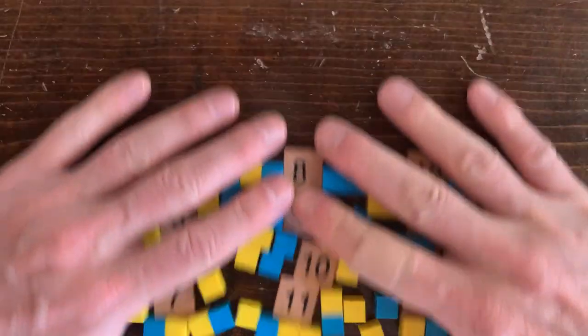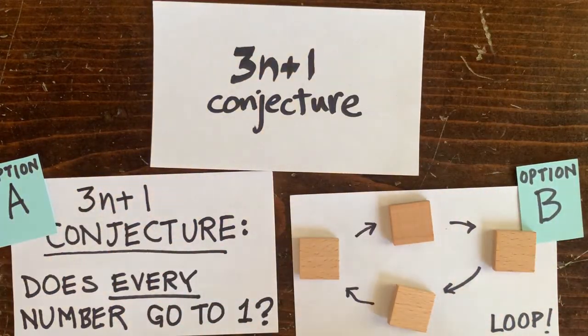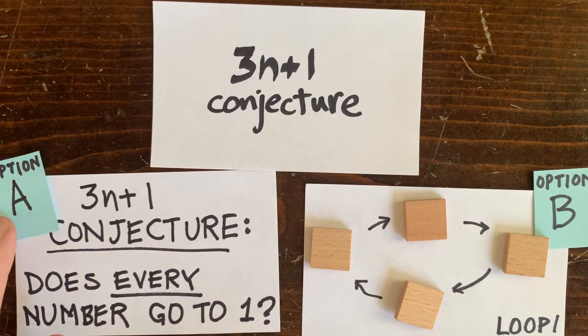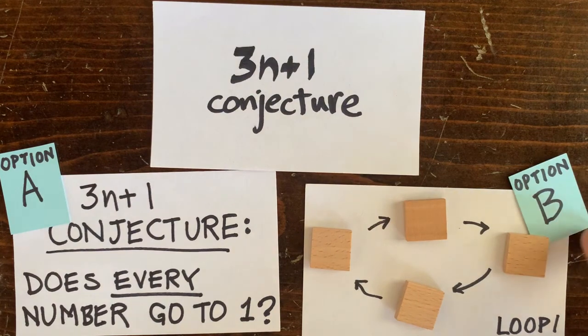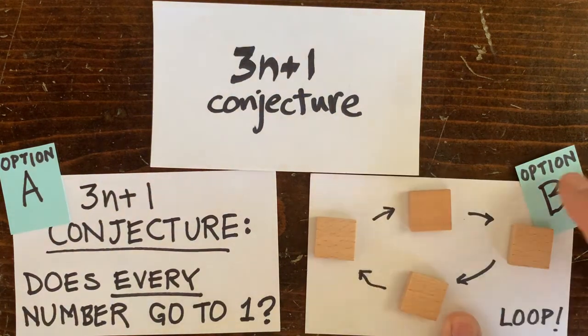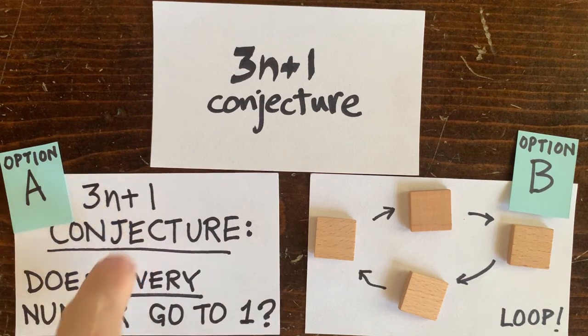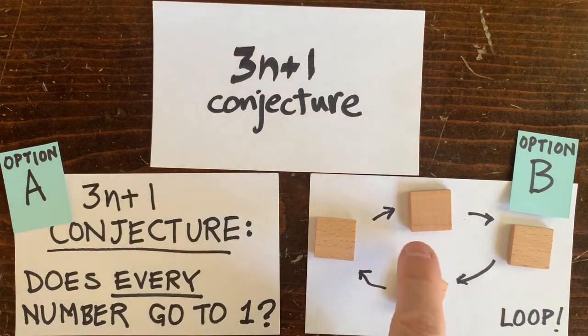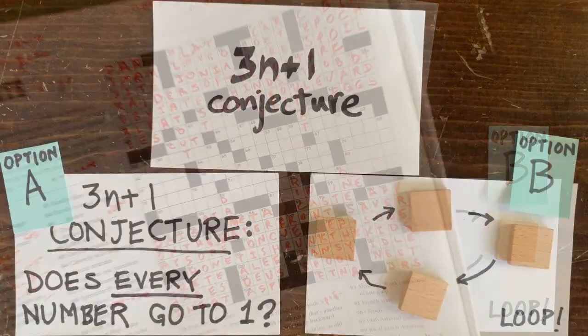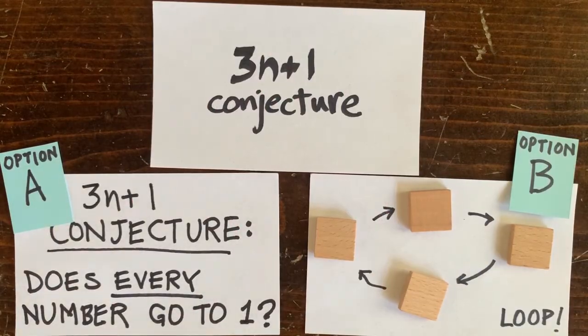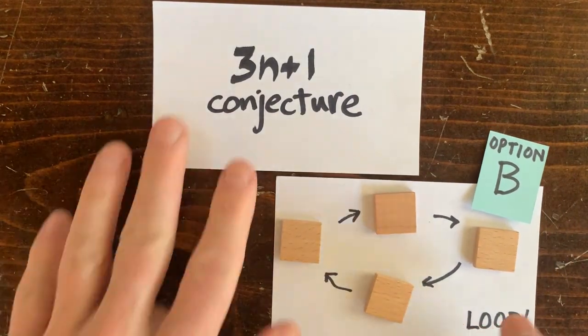So let's go back to the big picture. We've got a couple of clear choices for how to proceed. A, proof that every number goes to 1, or B, find some number that loops back on itself and doesn't go to 1. Some famous mathematicians suggest that we work like this. Every Monday, Wednesday, and Friday we work on A, and every Tuesday, Thursday, and Saturday work on B. On Sunday, just do the crossword puzzle. I say we go for B and hunt for a loop. It's a concrete task, and we'll definitely know if we've succeeded. In the next episode, we'll start the hunt, so stay tuned.